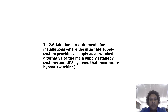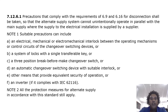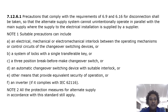Additional requirements for installations where the alternate supply system provides a supply as a switched alternative to the main supply, including standby systems and UPS systems that incorporate bypass switching: precautions complying with the requirements of 6.9 and 6.16 for disconnection shall be taken so that the alternate supply system cannot unintentionally operate in parallel with the main supply. Suitable precautions can include an electrical, mechanical or electromechanical interlock between the operating mechanisms or control circuits of the changeover switching device, or a system of locks with a single transferable key.